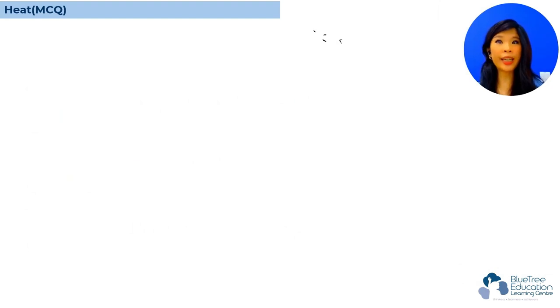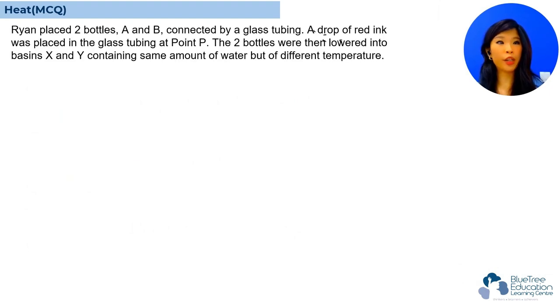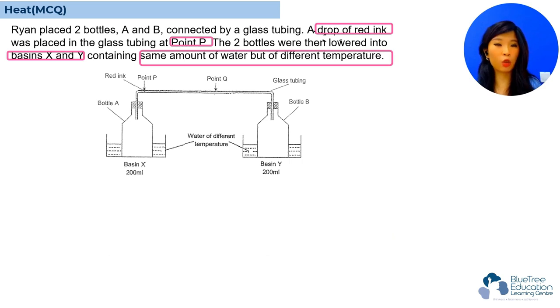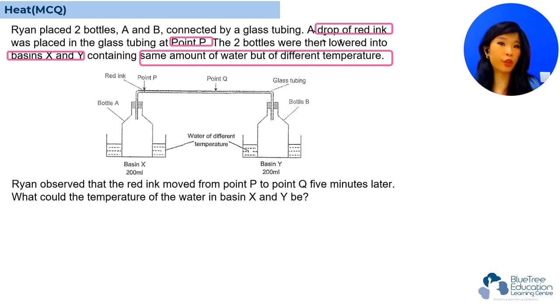Let's start with our heat MCQ question. Brian placed two bottles, A and B, connected by glass tubing. A drop of red ink was placed in the glass tubing at point P. The two bottles were then lowered into basins X and Y, containing the same amount of water but of different temperature. So, let's take a look at the diagram. We know that bottle A is immersed in basin X and bottle B is immersed in basin Y. Both basins have the same amount of water, 200 ml, but of different temperature.